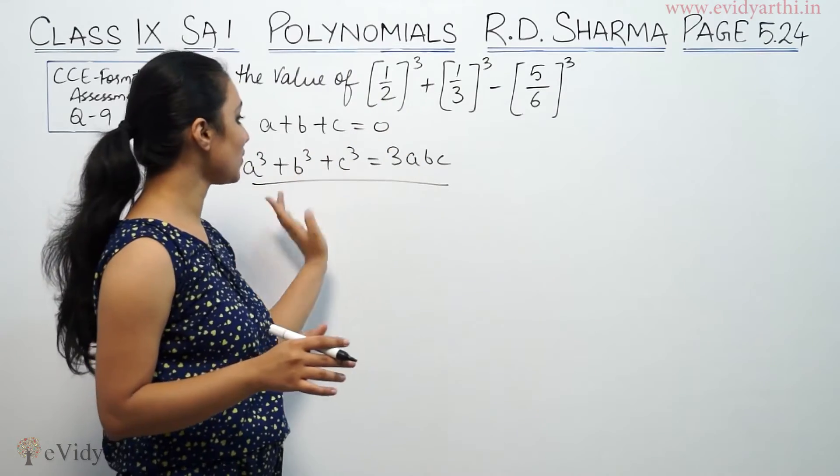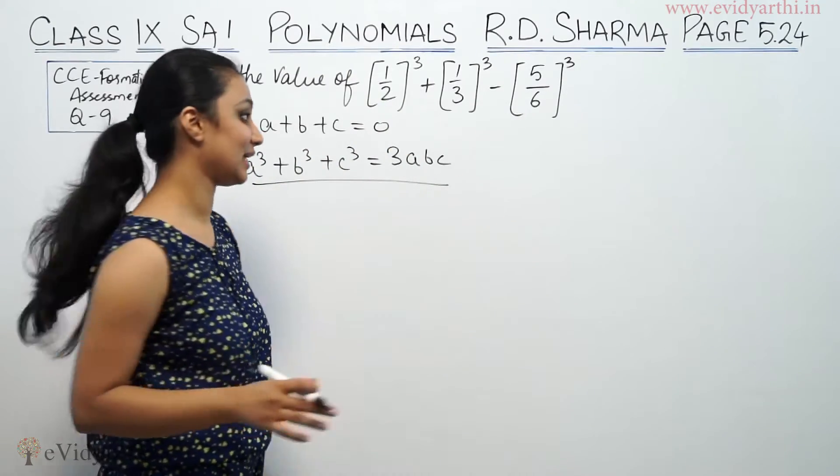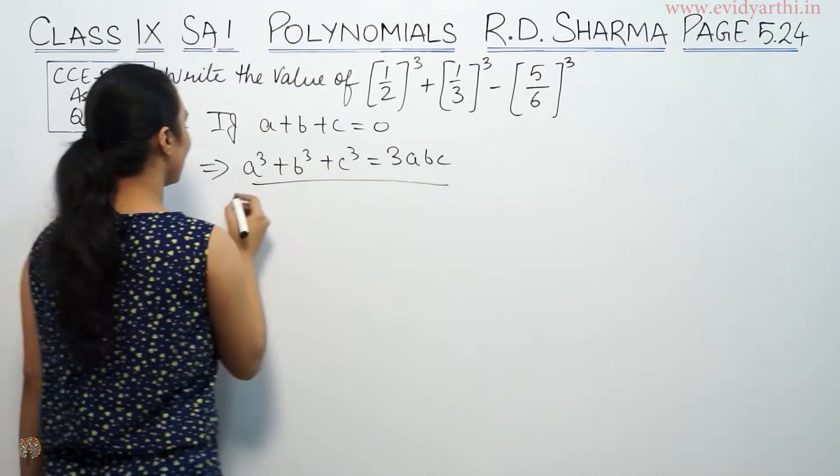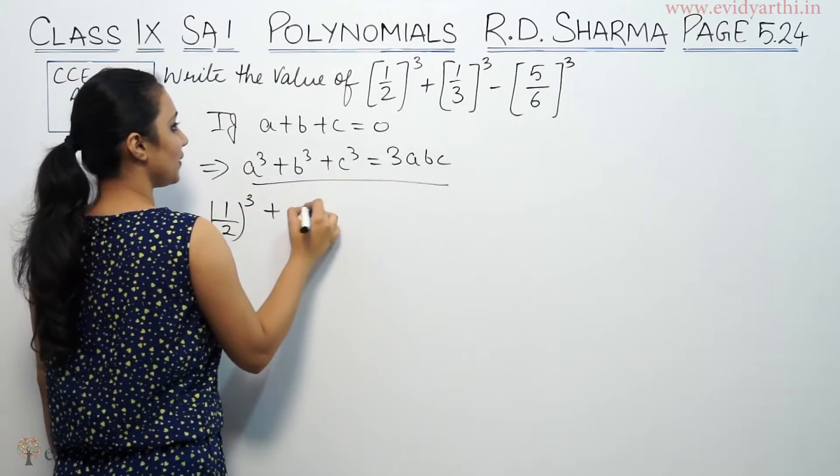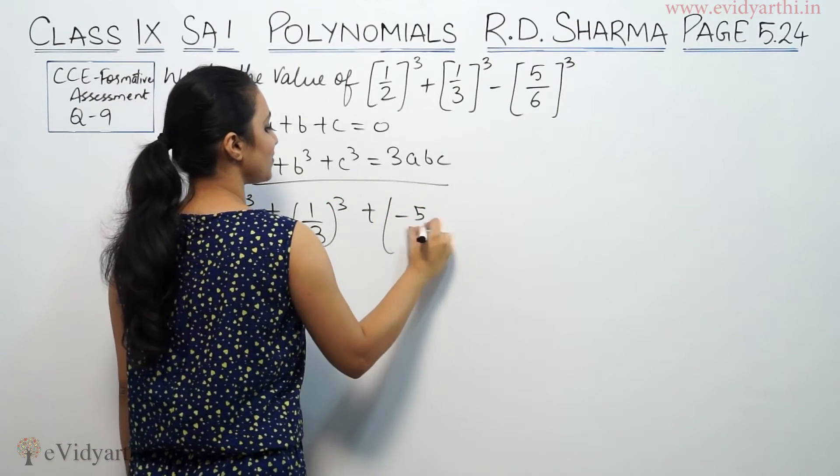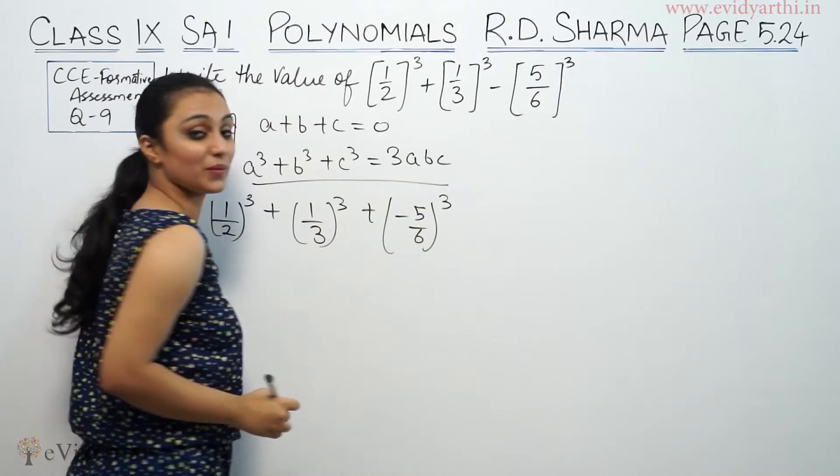In this case, if a + b + c = 0, this equals 3abc. Similarly here, we have a³, b³, c³. You can write this as (1/2)³ + (1/3)³ + (-5/6)³.